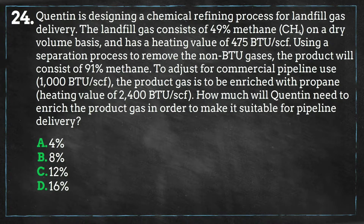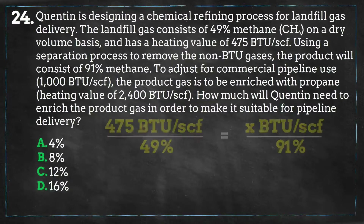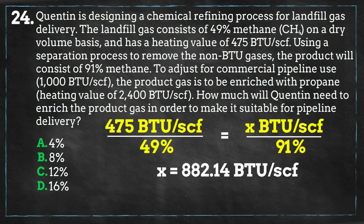First, let's solve for the heating value of the newly concentrated landfill gas. The gas directly out of the landfill has a heating value of 475 BTU per standard cubic foot at a methane percentage of 49%, while the refined gas will have a methane concentration of 91%. We can simply do a ratio between the two gases and we get a heating value of 882.14 BTU per standard cubic foot.